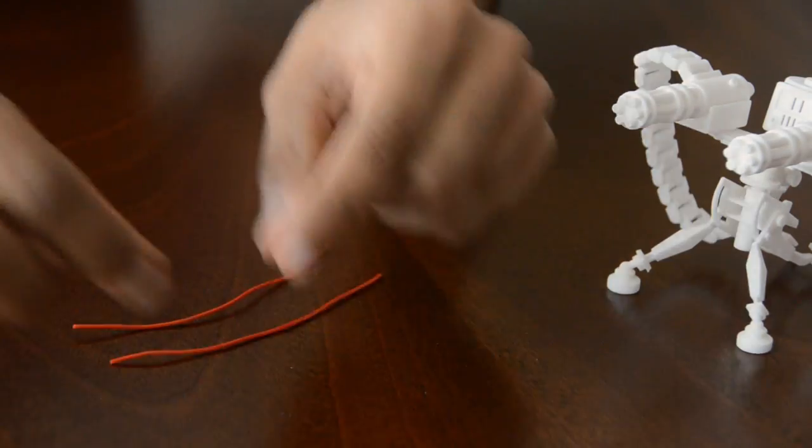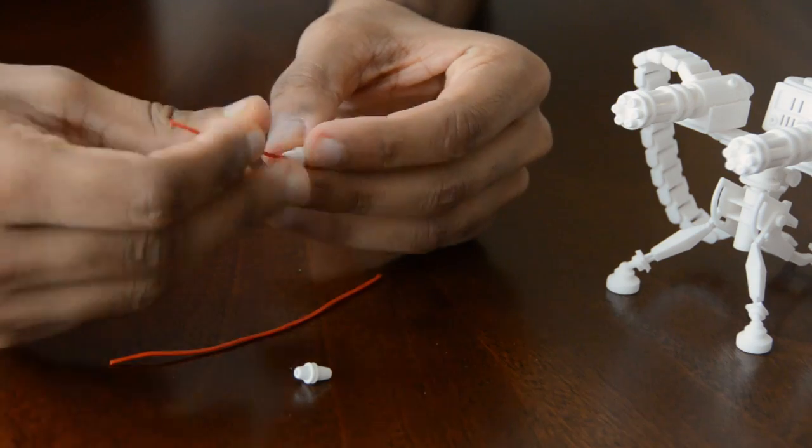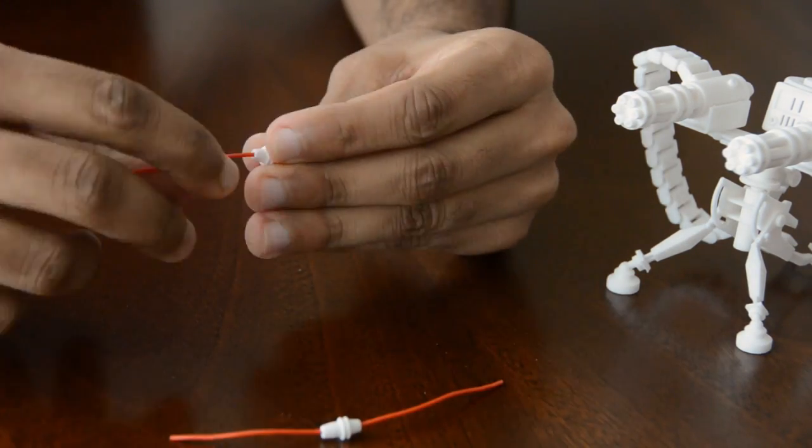The last part is to attach the cabling from the canister to the gatling guns. Here I thread on the cable blocks, and then thread the wire into the relevant holes on the model.